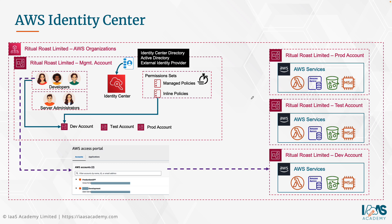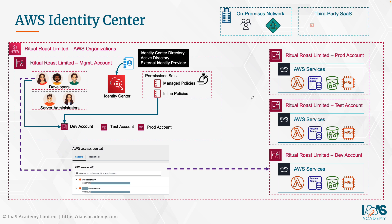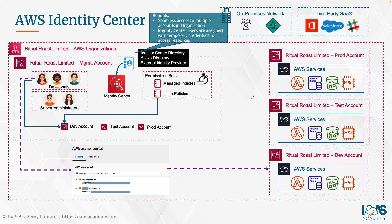In addition to enabling access to all AWS accounts through a single pane of glass, AWS Identity Center also integrates with on-premises networks through federation and supports single sign-on with external third-party applications such as Microsoft Office 365, Salesforce, and Slack. When it comes to the Identity Center, users get seamless access to multiple accounts in your AWS organization and are assigned temporary credentials. The permission sets dictate how long those credentials are valid before users need to re-login.